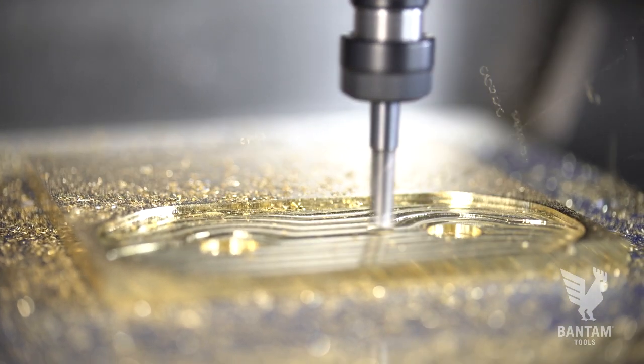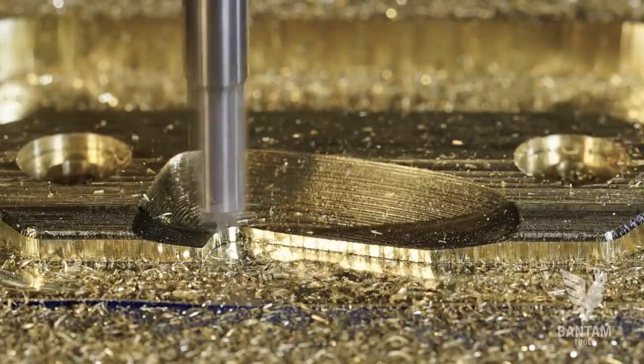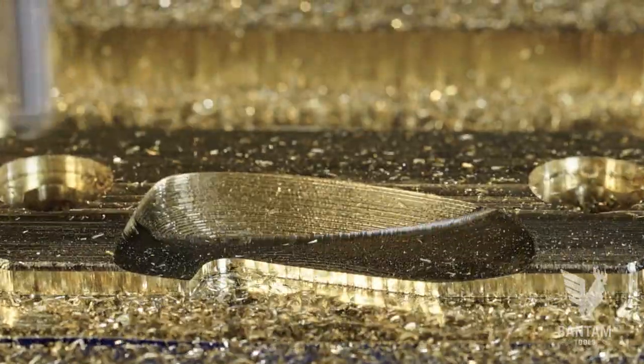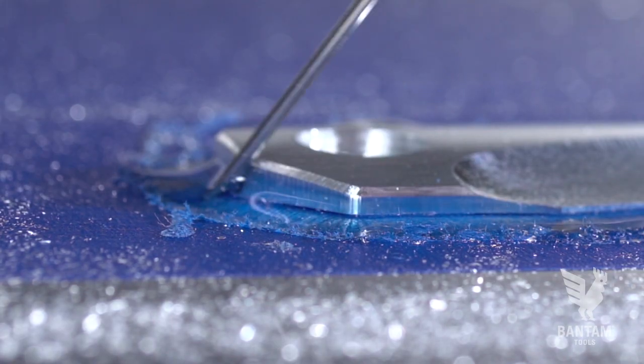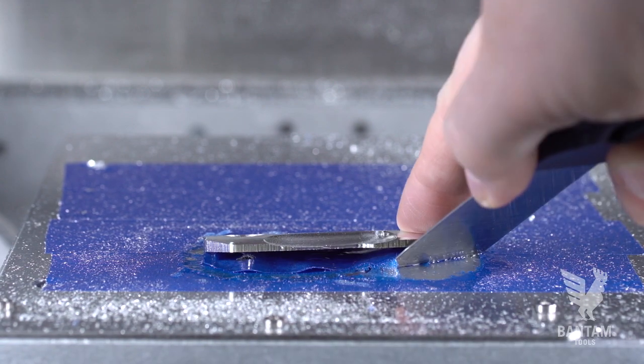When one side is finished, repeat the process for the other side. You can remove the stock from the mill using a little rubbing alcohol to dissolve the adhesive and a putty knife to gently lift the piece out of the mill.